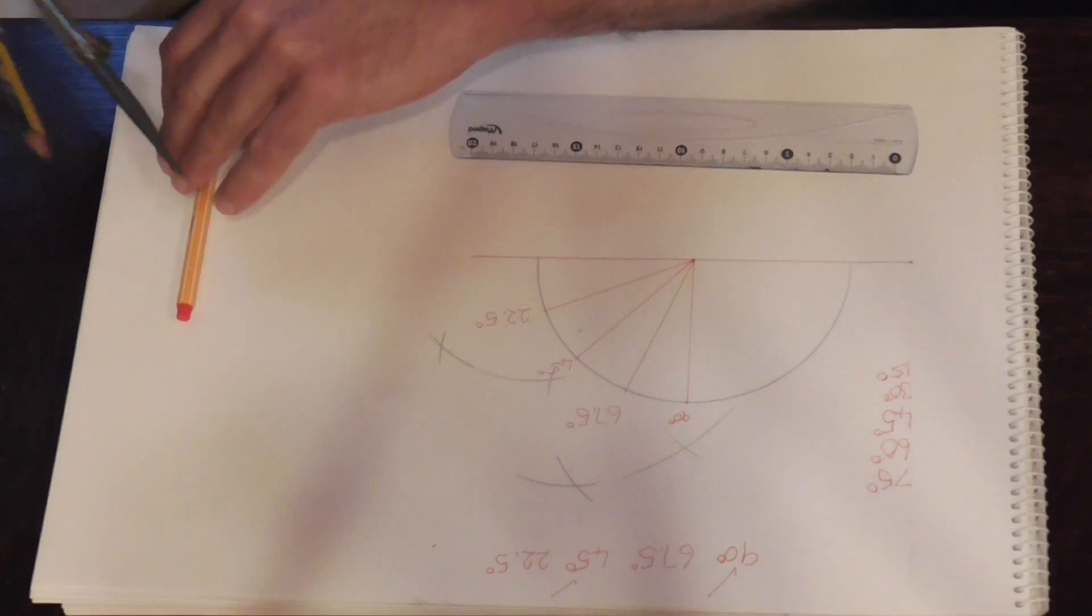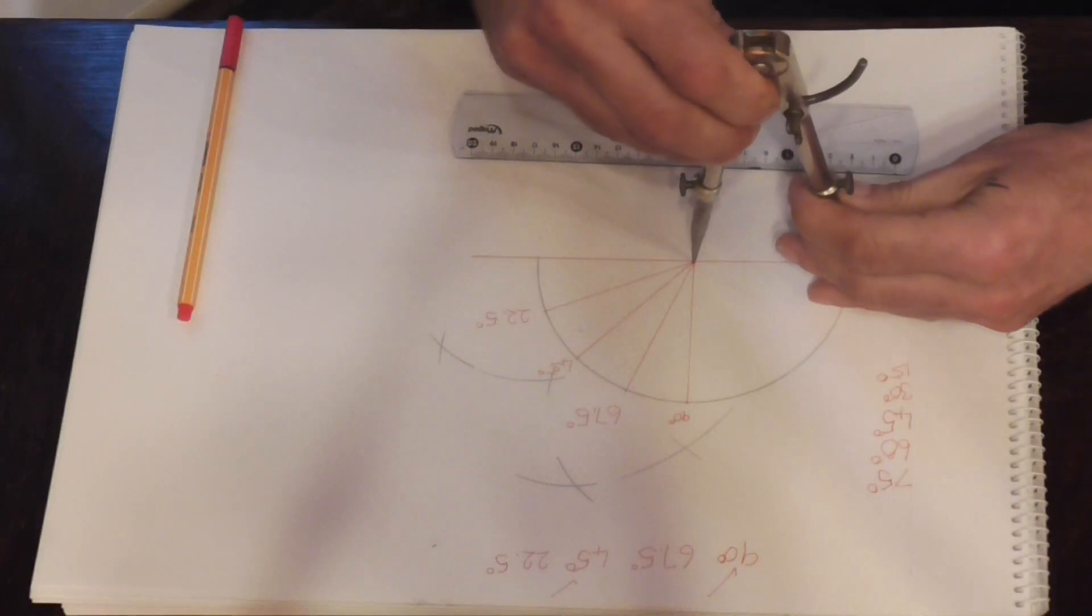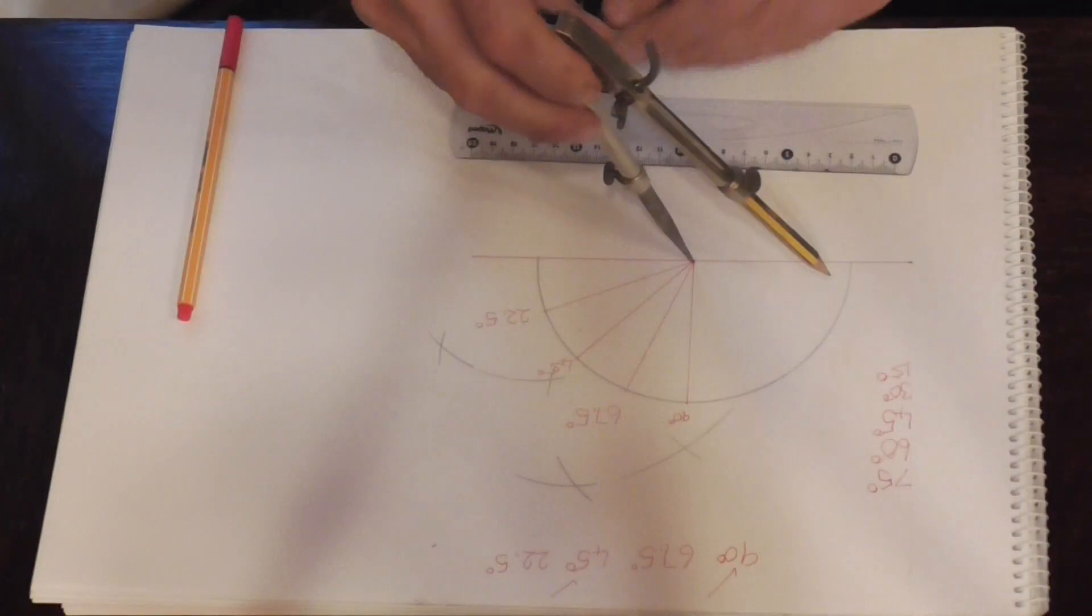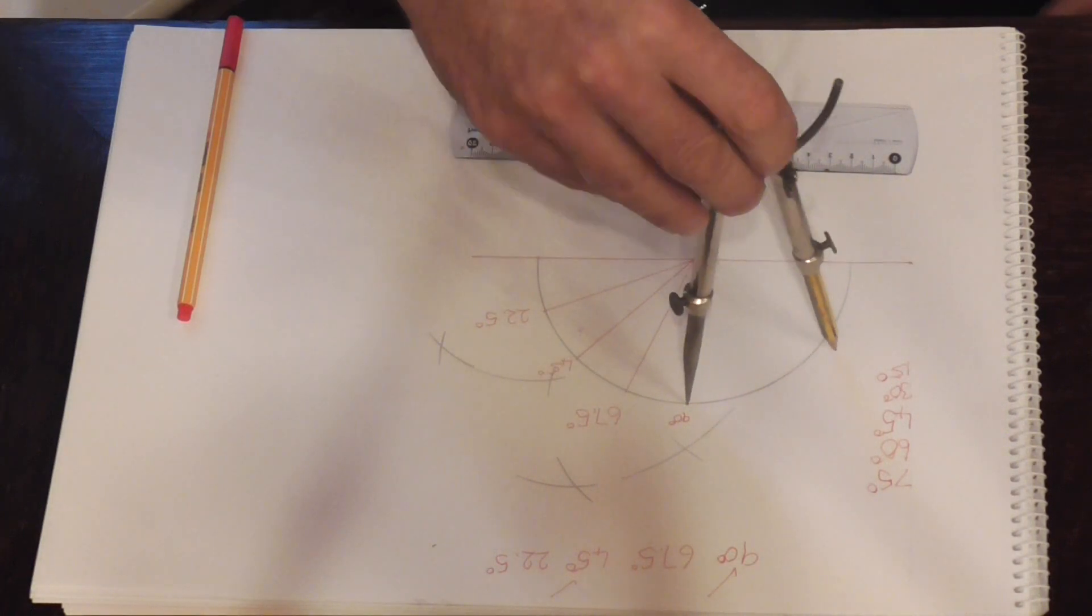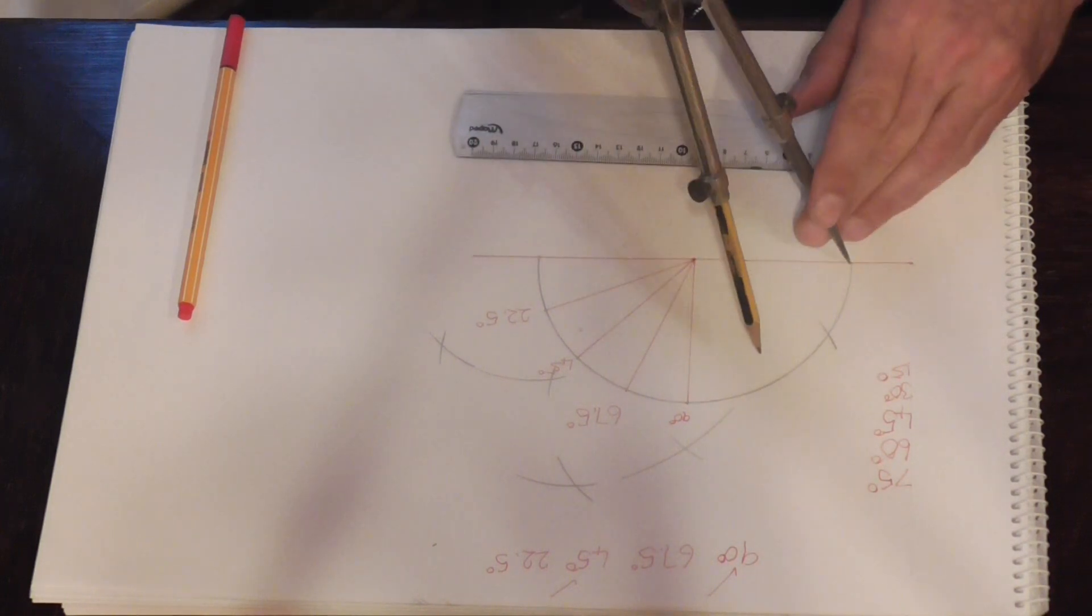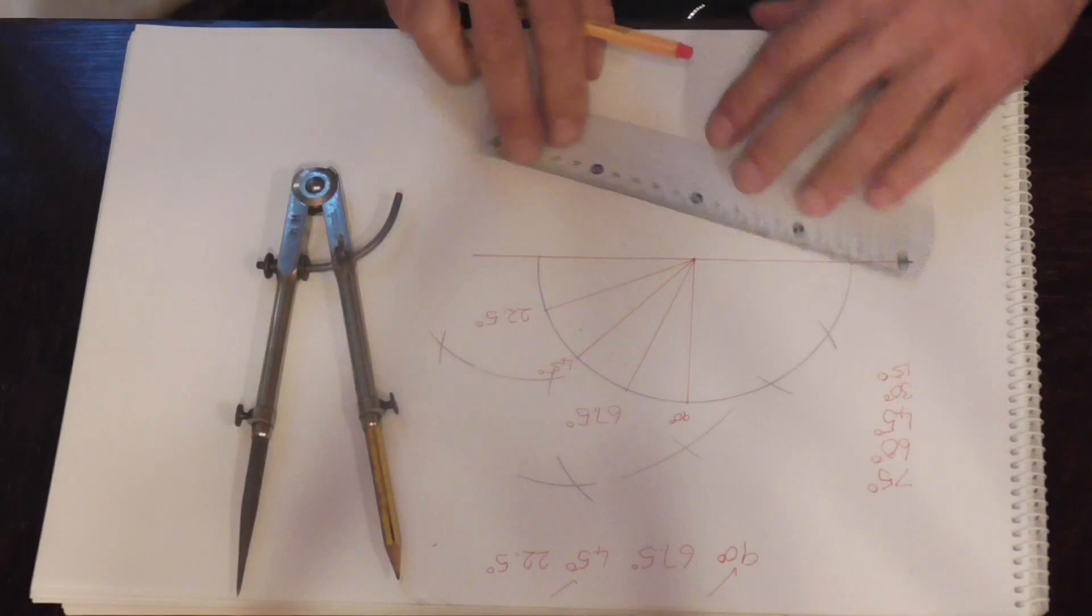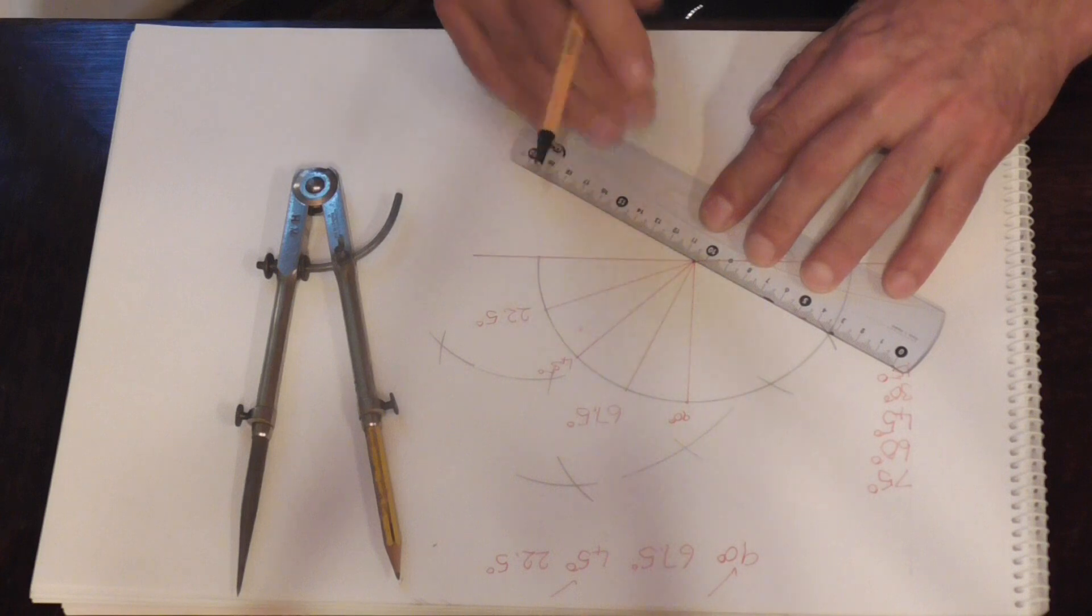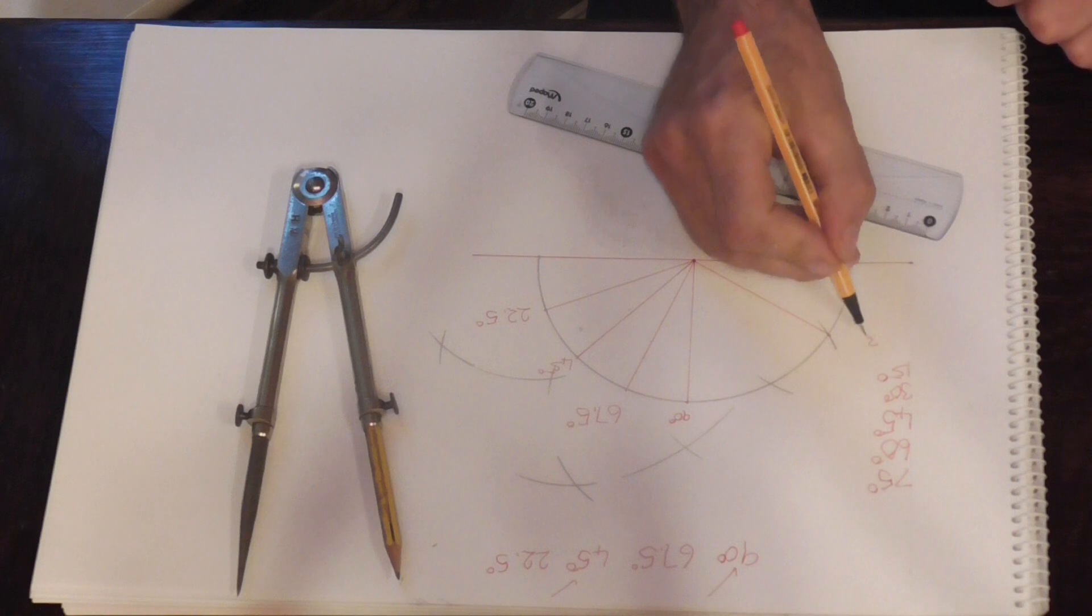So we take our dividers, put them in the middle, put them back up to the diameter. Just check that on this side. Lock that in, put that on there, mark that in. Take that through center there. That's our 30 degrees.